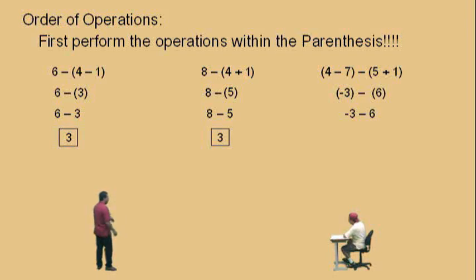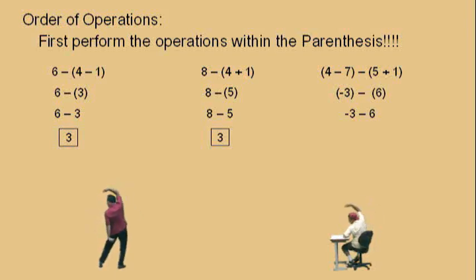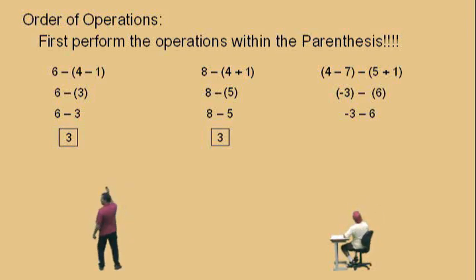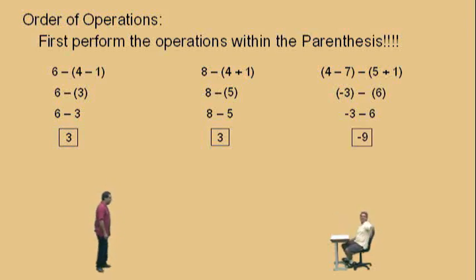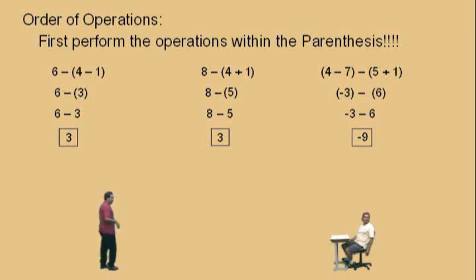Now, negative 3 subtract 6, Charlie — think of a number line. Negative 3, we're subtracting — which way do we move? To the left. So negative 3 subtract 6 would be what? Negative 9. Very nice. So we should have our subtraction techniques down by now.